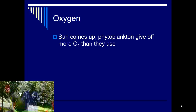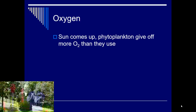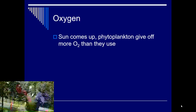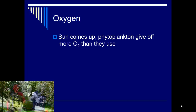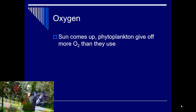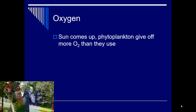Oxygen comes from the phytoplankton. As the sun comes up, the phytoplankton start to photosynthesize and give off oxygen. But phytoplankton are living, aerobic organisms too — they require oxygen, just like we do, just like fish do, just about anything requires oxygen. So the phytoplankton are consuming oxygen, but when the sun's up, they're producing way more than they consume.